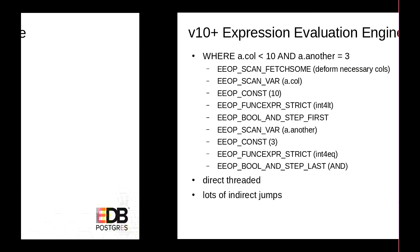Two things are worth noting. If a function is strict, we have to check whether any arguments are null, because then it will return null — that means we have conditional branches. We also have a conditional branch in the AND step where we short-circuit the expression if false. In Postgres, the compiler provides support for direct threading. There are a lot of indirect jumps between steps, because the source code doesn't know which expressions follow each other, so that has to be generic — basically an expensive indirect jump.